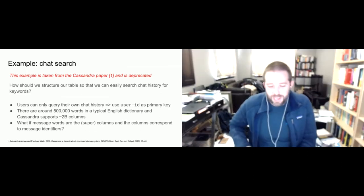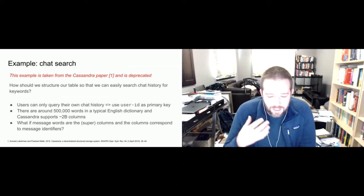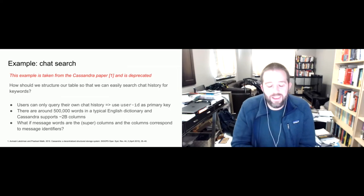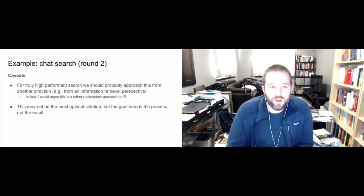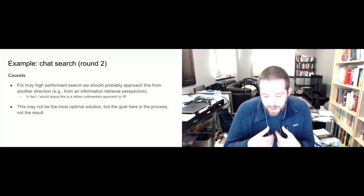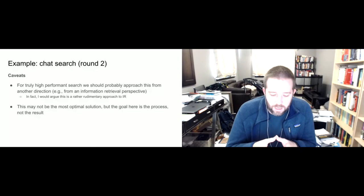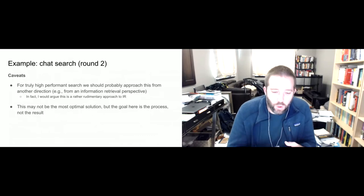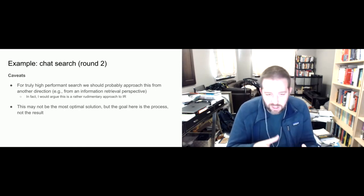Now, that approach is based on an old version of Cassandra, so let's think through how we might implement a similar search process with a more modern Cassandra. I want to caveat this: maybe the best approach here is to consult information retrieval texts and think about it from an IR perspective rather than forcing Cassandra. The solution we come up with may not be the most optimal, but the point is the process — the journey to arrive at our solution, not so much the solution itself. After this talk, you should be better equipped to think through how to structure your data in Cassandra for better performance.